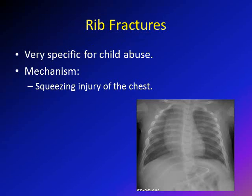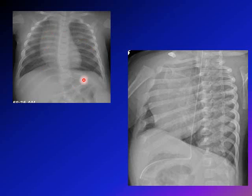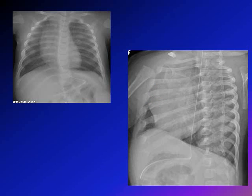Rib fractures are very specific for non-accidental trauma. They usually affect the posterior ribs, and the mechanism is typically a squeezing injury of the chest. On a standard chest x-ray you may see evidence of rib fractures after healing, but to visualize the ribs better, oblique x-rays or CT are preferred. On oblique views you can clearly see healed fractures in multiple ribs — this is a fracture that healed in this rib, this rib, and this rib.